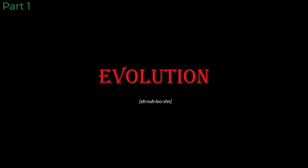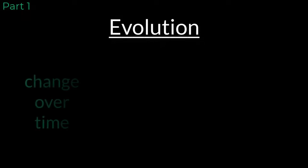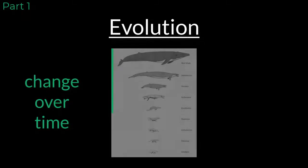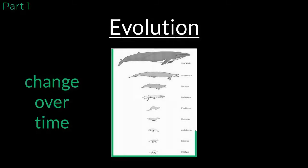Evolution is a concept defined by change. The theory of evolution, at its most fundamental level, describes how organisms change over time and informs us of the mechanisms scientists observe that support this process. While this topic can bring about many larger questions that start with why, the focus of this exploration will be to ask questions that start with how.